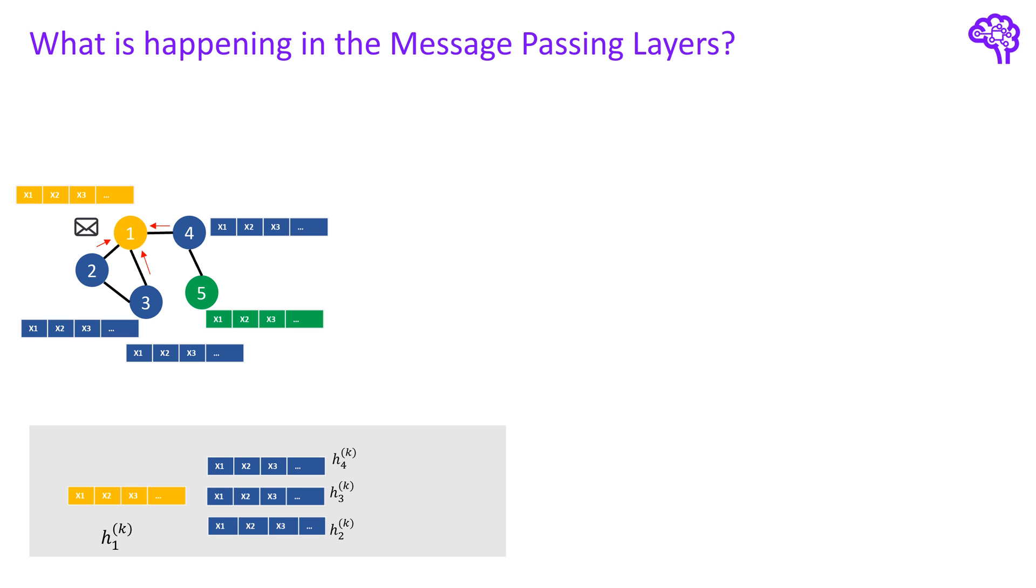Then we perform an aggregation on the neighbor states to combine their information. Finally we put our current state and the combined neighbor information together to get a new state or embedding in layer K plus one. Note how some of the feature information of the blue nodes enters the state of the yellow node.